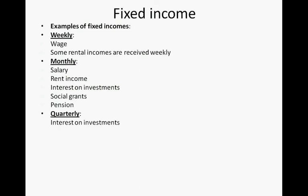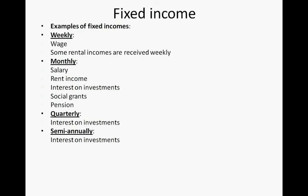Quarterly incomes can include interest on investments — you can arrange to receive that quarterly. Semi-annually, meaning every six months, interest on investments can also be arranged to be paid semi-annually. A yearly income is mostly interest on investments.